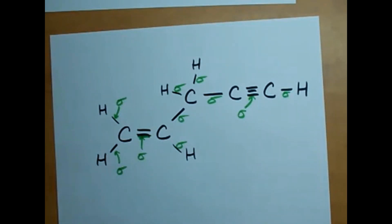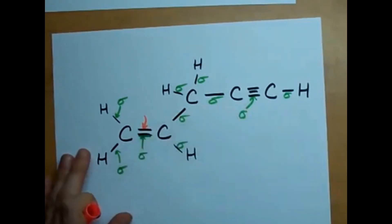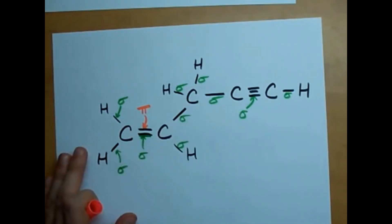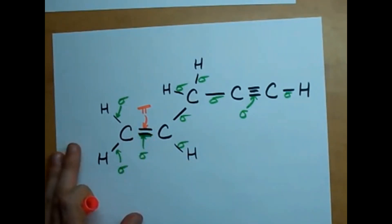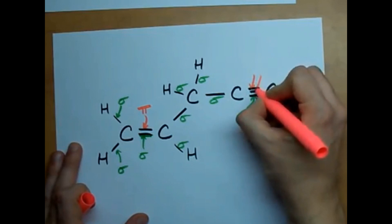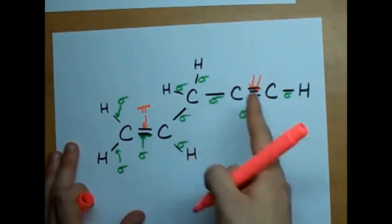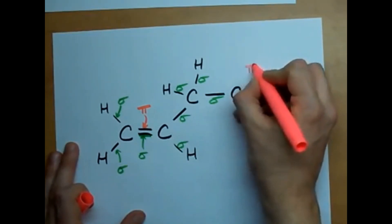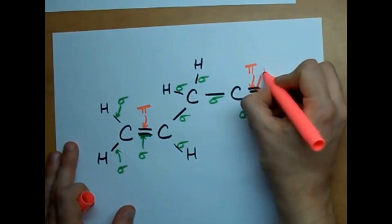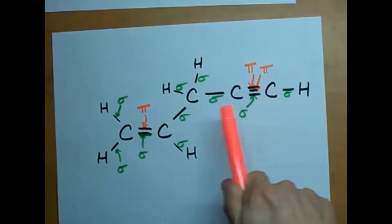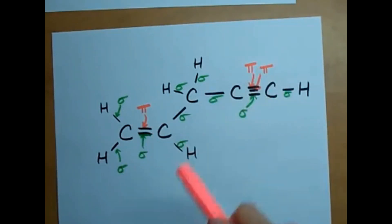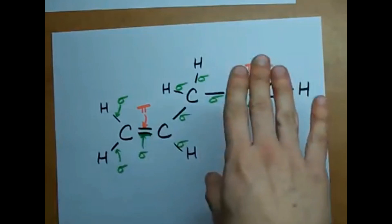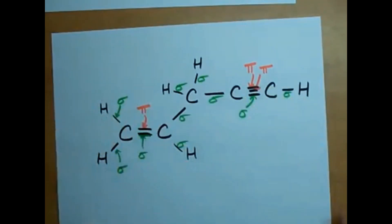Every second or third bond is a pi bond. In a double bond, the first is sigma and the second is pi. In a triple bond, there is a second and third bond — one is a pi bond and the other is also a pi bond. Every first bond is sigma and every second or third is pi, so it's easy to tell whether a bond is sigma or pi.